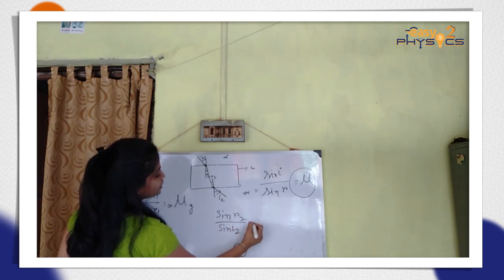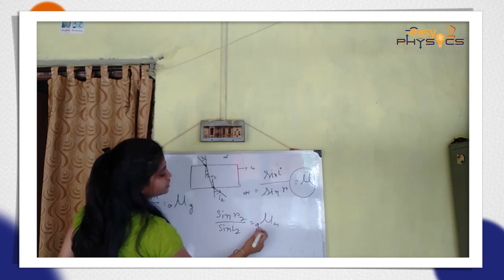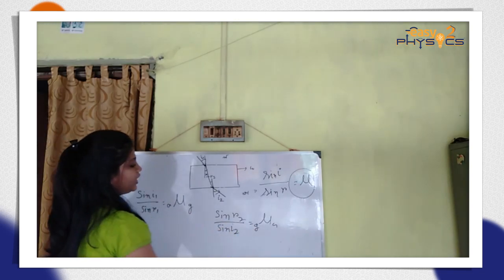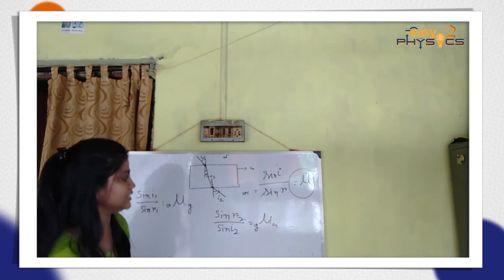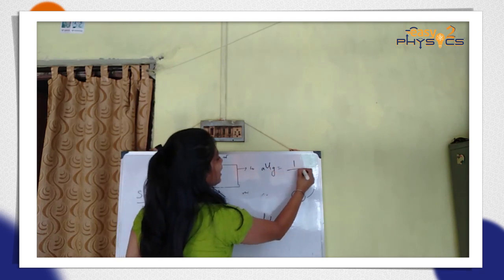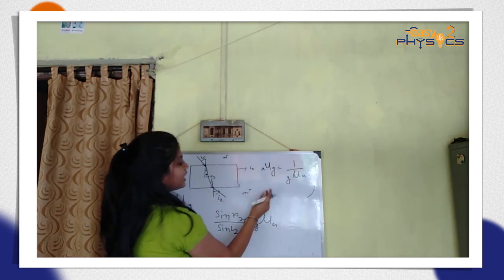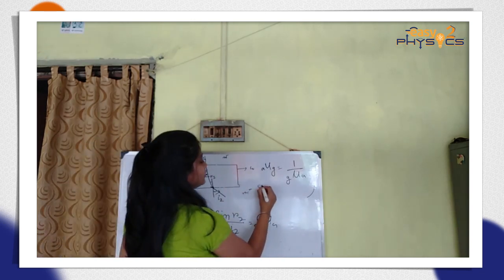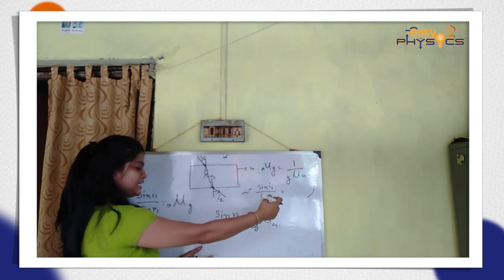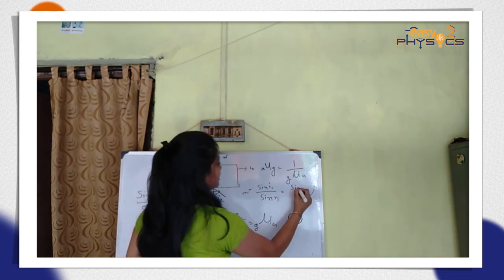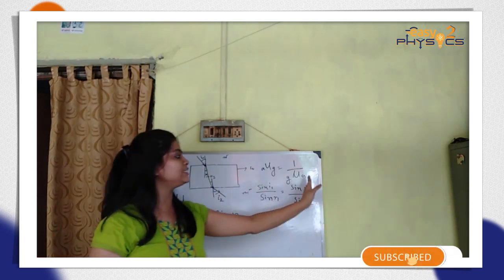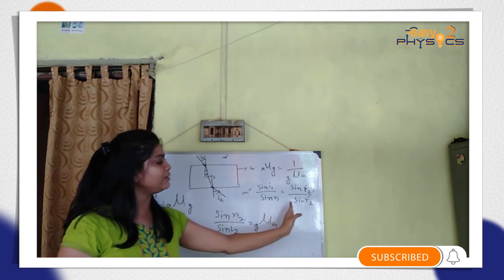Sin i2 is equal to mu — glass to air, gas to air. We can see that mu AG and mu GA are the two reciprocals of each other. That means sin i1 and sin i2 are related to sin r1 and sin r2 respectively.